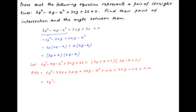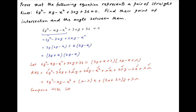Combining the coefficients of like terms, we get 6y² - xy - x² + (μ - λ)x + (3μ + 2λ)y + λμ. We compare this with the left-hand side, which is equal to 6y² - xy - x² + 30y + 36.